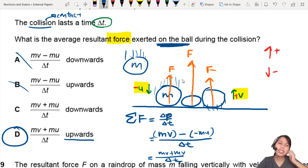Some of you may be concerned and say, what if I define up as negative and down as positive? Well, you will get something similar. You will get negative, you can factorize it out, MV plus MU over delta T, which can mean the same thing.